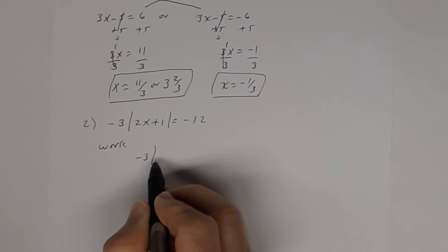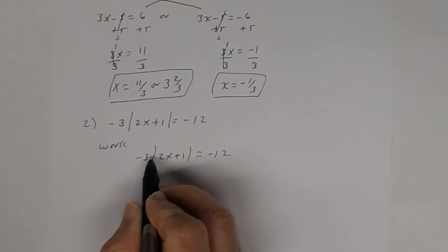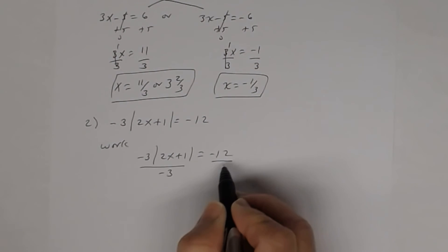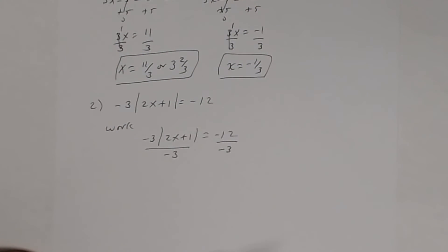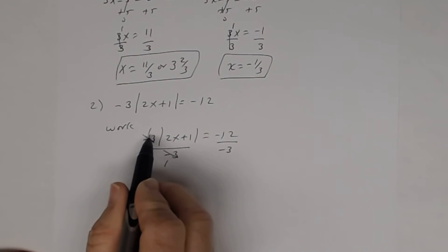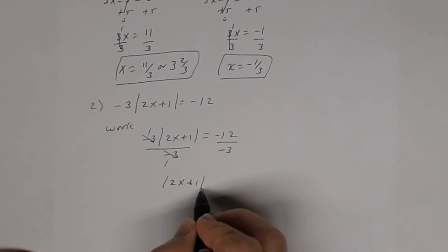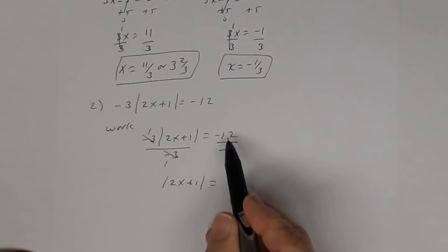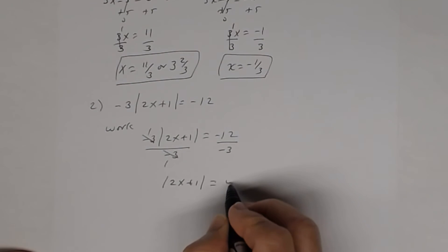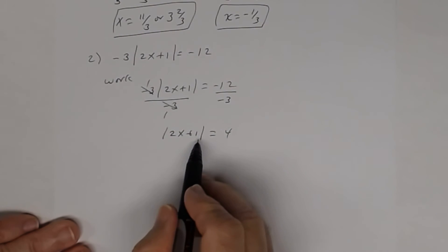The first thing you had to do was divide both sides by negative 3, because it's a multiplication and the opposite of multiplication is division. Negative 3 divided by negative 3 is 1, giving you the absolute value of 2x plus 1. And negative 12 divided by negative 3 is 4. Now you have the absolute value expression by itself.